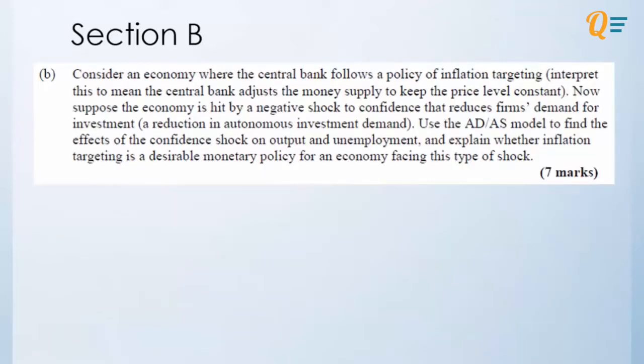Now for 16 part B, so we are considering an economy where central bank has a policy of inflation targeting, which means they'll try to keep price constant by changing their money supply. Okay, now we have a situation that there is a negative confidence shock. So this reduces firms' demand for investment, and use the ADAS model to find the impact on output and unemployment, and say whether it is a good policy for the economy. So how do you define a good policy?